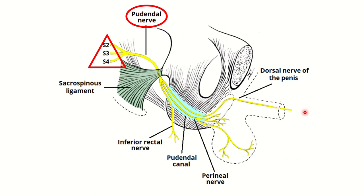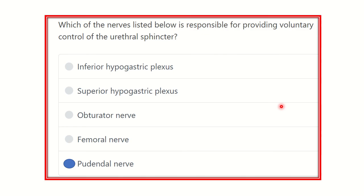The pudendal nerve arises from sacral 2, sacral 3, and sacral 4 — this nerve root should be remembered carefully. It travels along and finally reaches the urethra, supplying the external urethral sphincter. So our final answer is the pudendal nerve, which is responsible for voluntary control of the urethral sphincter.